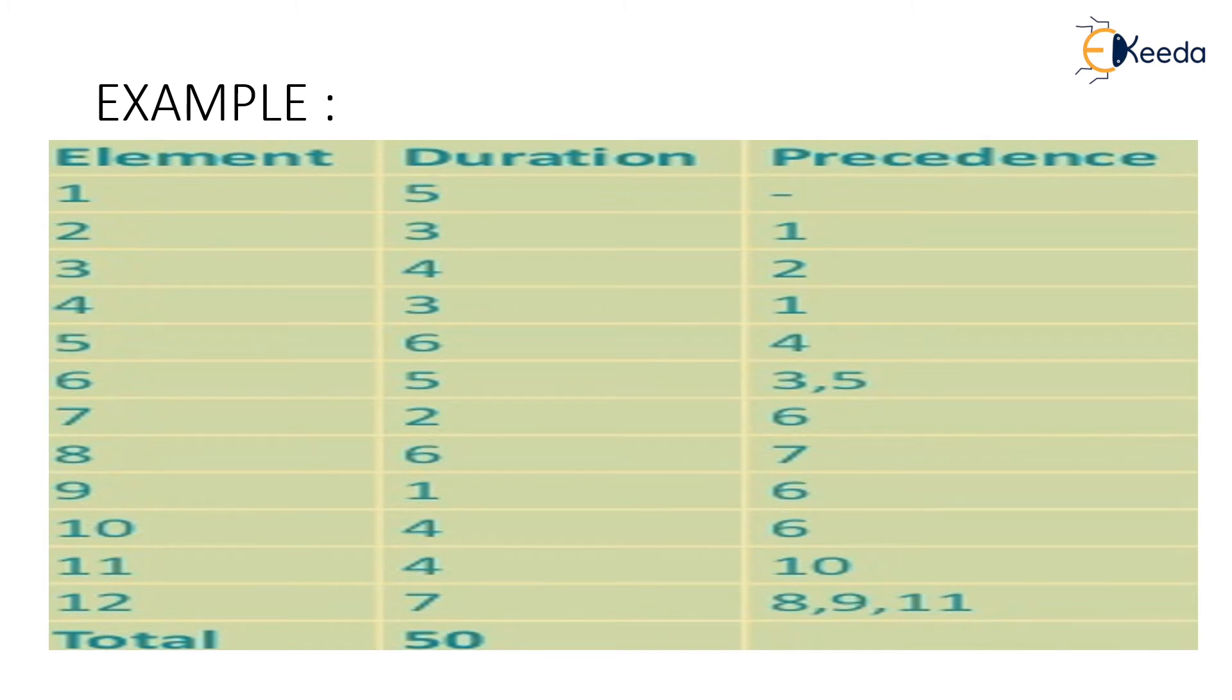Before 3 it is 2, before 4 again 1, before 5 it is 4, before 6 it is 3 and 5, before 7 it is 6, before 8 it is 7, 9 it is 6, before 10 it is 6, before 11 it is 10 and before 12 it is 8, 9 and 11.